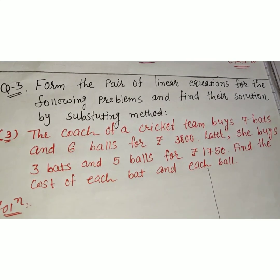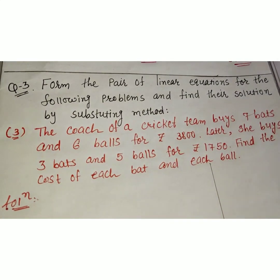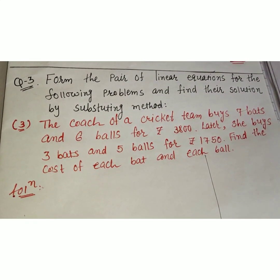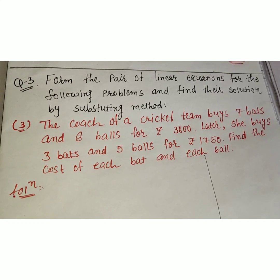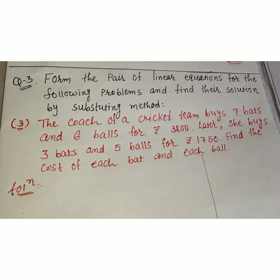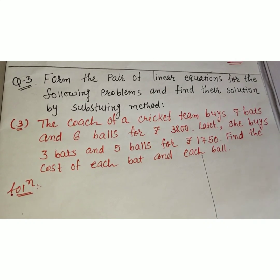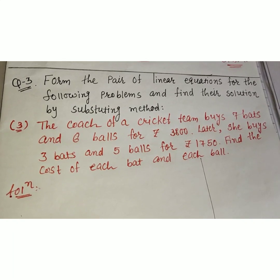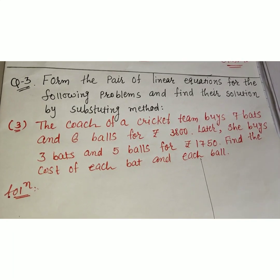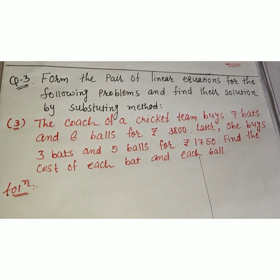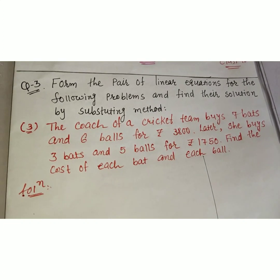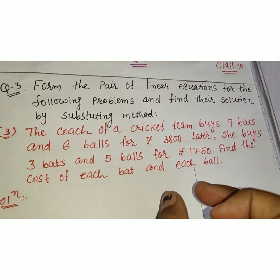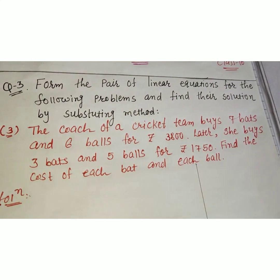Sum number 3: The coach of a cricket team buys 7 bats and 6 balls for rupees 3800. Later he buys 3 bats and 5 balls for rupees 1750. Find the cost of each bat and each ball.